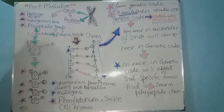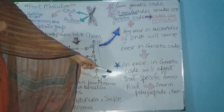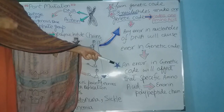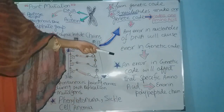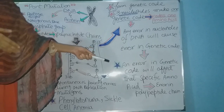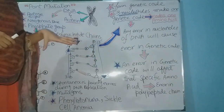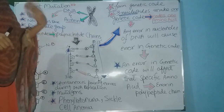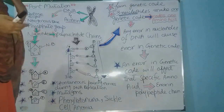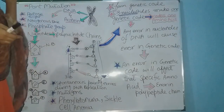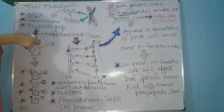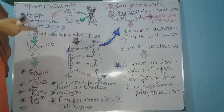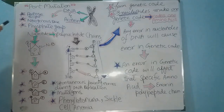Since amino acids form polypeptide chains, any error in the genetic code will result in an error in the amino acid structure, and hence the protein formed will not be able to perform its function. As we know, DNA is transcribed into RNA, and that RNA is translated into protein. So if any error in the nucleotide occurs, that error will be carried into the protein, and the protein will not function properly.